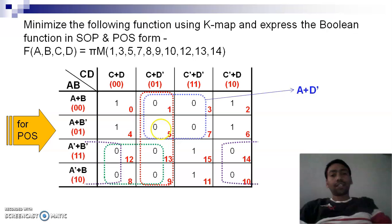If we talk about sum terms, the first term is in this block, the blue block is in the first two rows. So if we look at the first two rows, A plus D complement should be the first sum term.